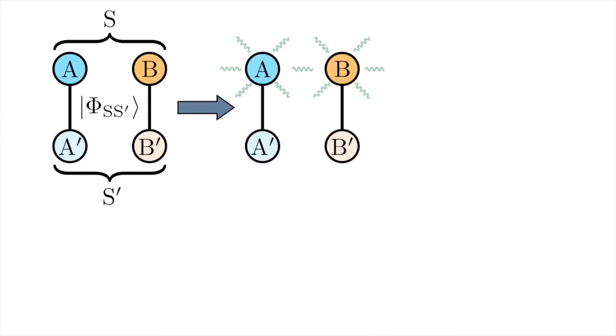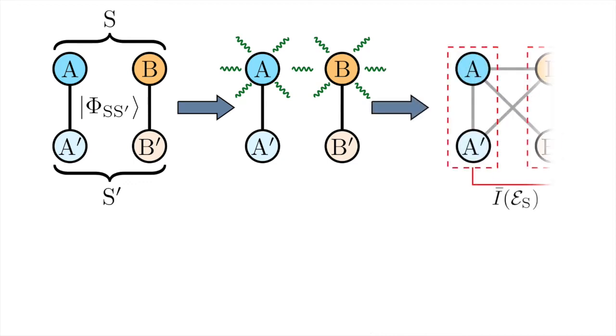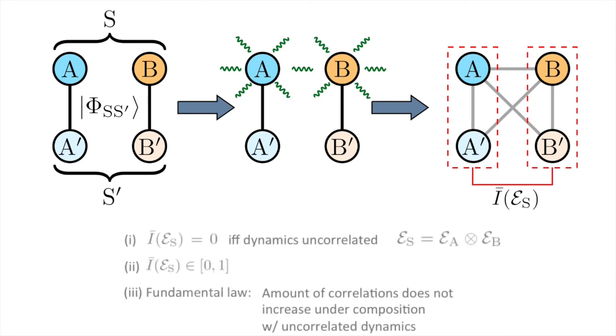The amount of correlations in these dynamics can then be quantified by the quantum mutual information of the resulting final state, the so-called Choi-Jamiołkowski state. This mutual information is zero if and only if the dynamics on A and B is uncorrelated.